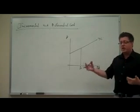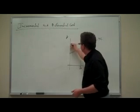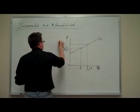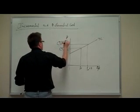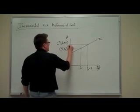You're reading off what those two costs are. Here's the total cost associated with Q0, and here's the total cost associated with Q0 plus X. Incremental cost is the difference between those two.